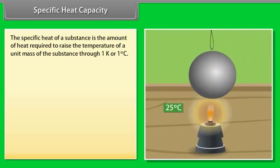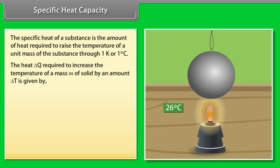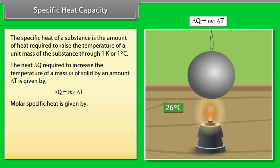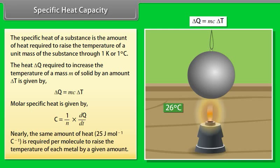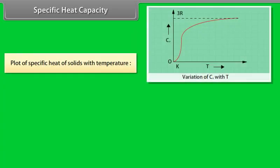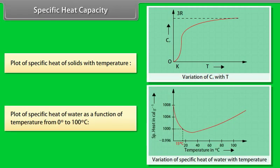The specific heat of a substance is the amount of heat required to raise the temperature of a unit mass of the substance through 1 Kelvin or 1 degree Celsius. The heat delta Q required to increase the temperature of mass M of a solid by delta T is given by delta Q = MC delta T. Molar specific heat is given by C = (1/N) dQ/dT. Nearly 25 J/mol/°C is required to raise the temperature of each metal by a given amount. A graph shows the variation of specific heat of solids and the specific heat of water from 0°C to 100°C.